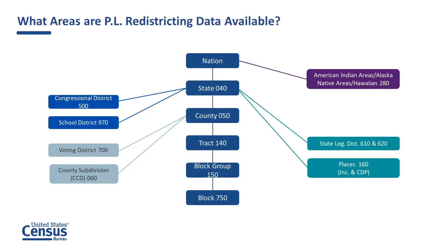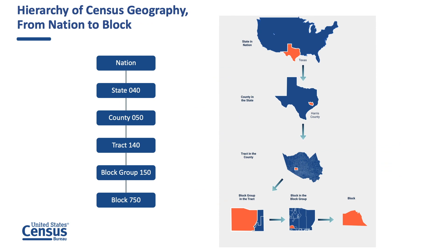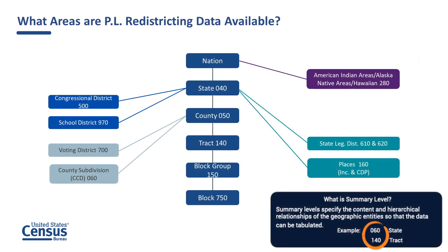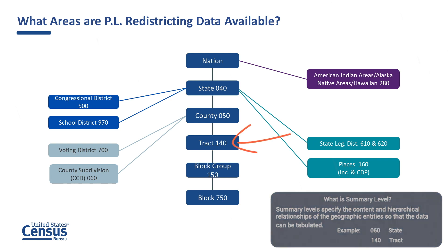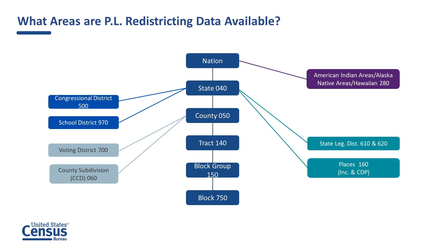Redistricting data are available for the common geographies shown on this hierarchy chart. The geographies in the centerline of this graphic work like nesting dolls. The smallest level of geography is the block. Blocks are aggregated to form a block group. Block groups form a tract, and so on. Every geography is given a summary level code — for example, a tract is given the summary level code 140. In later lessons, you will learn about how to use these codes to find data.